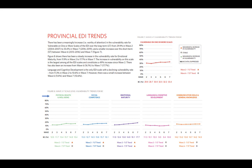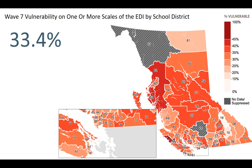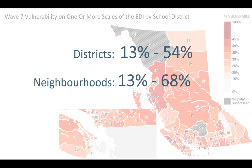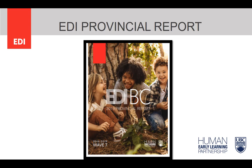Here you can see the trend lines for each of the individual scales, and below, the icon identifying whether there has been a meaningful change or a stable trend across the short and long term. This map is not included in the profiles, but provides useful context for understanding your community data. This is the overall provincial picture of vulnerability on one or more scales across the province by school district for Wave 7. The darker the red, the higher the vulnerability rates, and the lighter pink or white, the lower the vulnerability rates. The range is at the district level: 13% at the lowest, up to 54% at the highest; and at the neighborhood level: 13% at the lowest and 68% vulnerability at the highest. This speaks to the fact that children's developmental outcomes are impacted by where they live in the province. If you are interested in understanding more about the provincial level data, we encourage you to check out the EDI Provincial Report for Wave 7, which is available on our website.